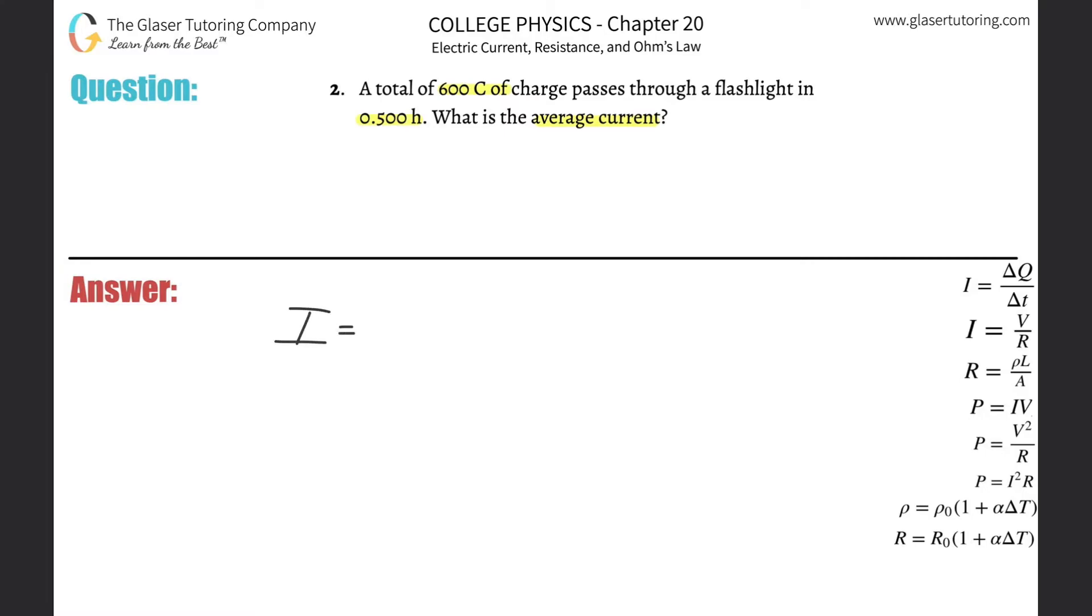So if we have to find the current, we need to know the formula that current is basically the change in charge passing through a particular point over the time in which it took that charge to pass that point.